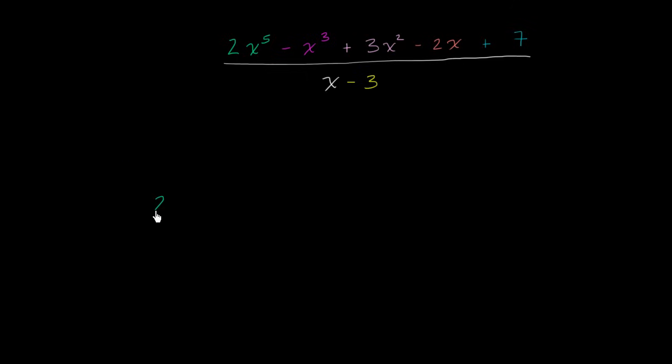So I have the 2 from 2x to the fifth. And then I have no x to the fourth. So it's really 0x to the fourth. So I'll put a 0 as the coefficient for the x to the fourth term. And then I have a negative 1 times x to the third. And then I have a positive 3 times x squared. Negative 2 times x. And then I have a constant term or 0 degree term of 7. I just have a positive 7.